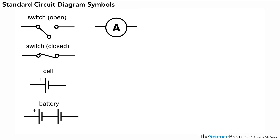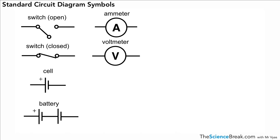The next symbol we're going to look at is an ammeter. This is an ammeter — a circle with an A — and it measures current through a circuit.